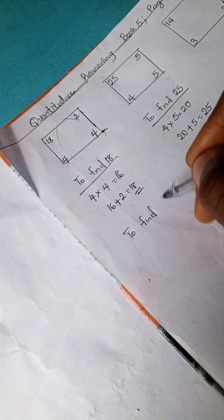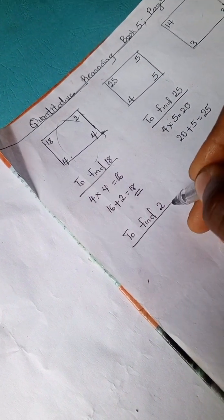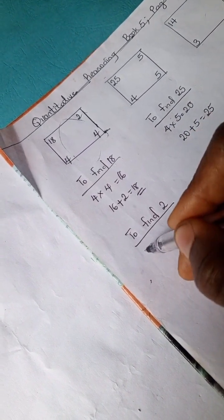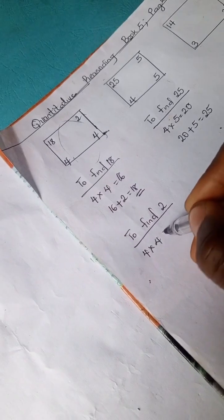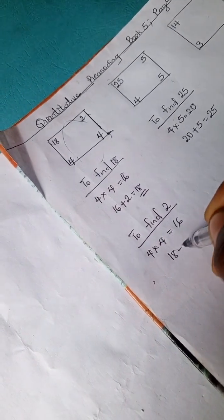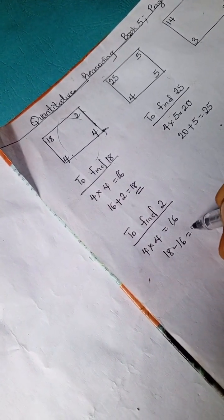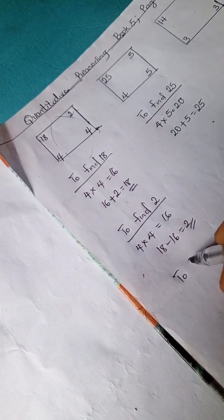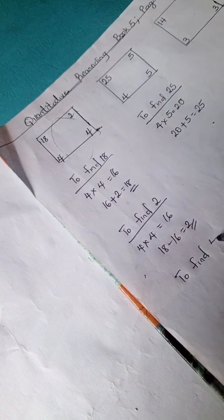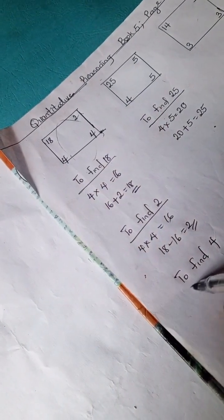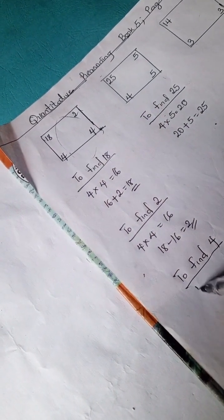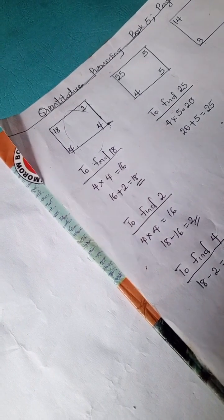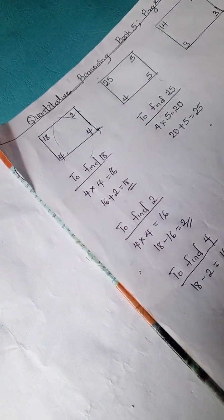To find 2, okay, so we can have 4 times 4 is 16. 18 minus 16 is 2.